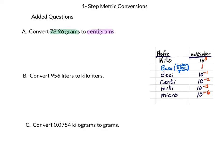We're going to start with what we know: 78.96 grams of whatever the substance is, and we're going to convert that over to centigrams. We'll write our ratio on the side. We see that one centigram is equal to 10 to the negative 2 grams. We'll start our question with what we know — 78.96 grams — and write that over 1. Then we decide which way we want our fraction to be. Since we have grams on the top, we should have grams on the bottom in the next fraction, which means centigrams will be on top.